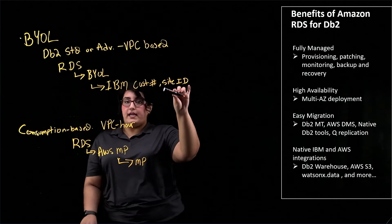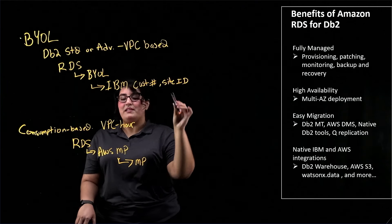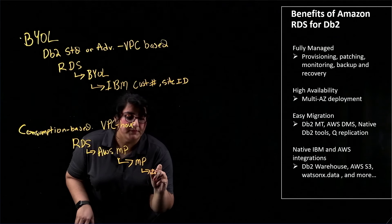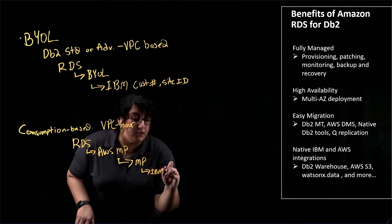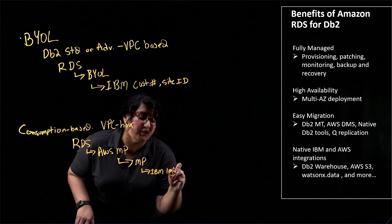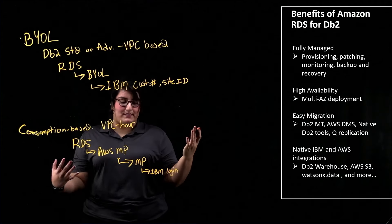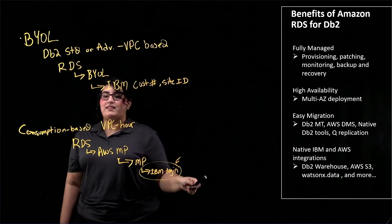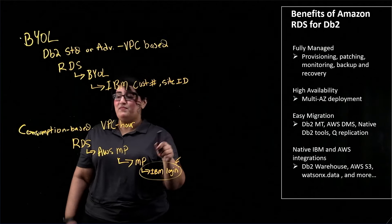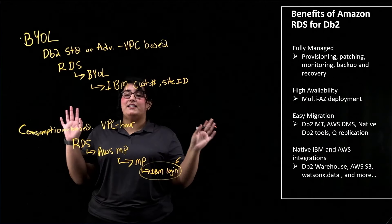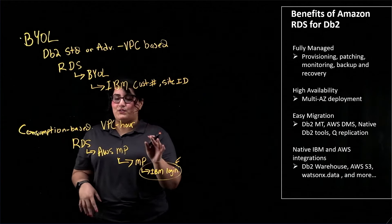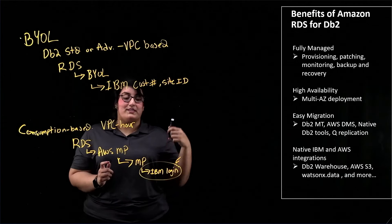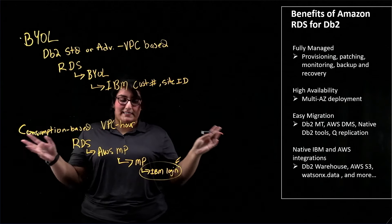Just like we had our IBM customer ID and site ID for BYOL, after the Marketplace, you'll be routed to an IBM login page where you'll register your new DB2 license. This step is essential and very important to ensure that the entire process is completed. With this, in just a few clicks, you'll be able to get started on your RDS for DB2 consumption-based hourly license and start your instance.